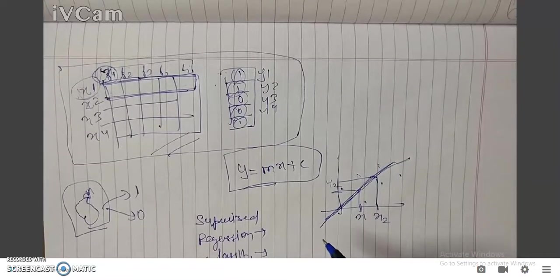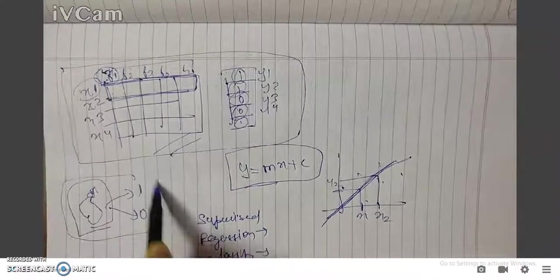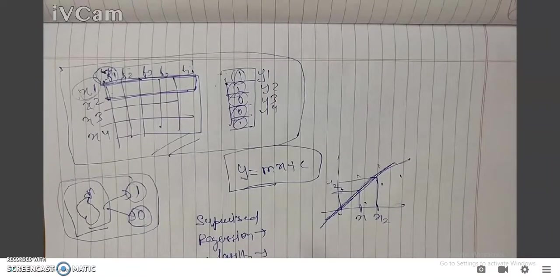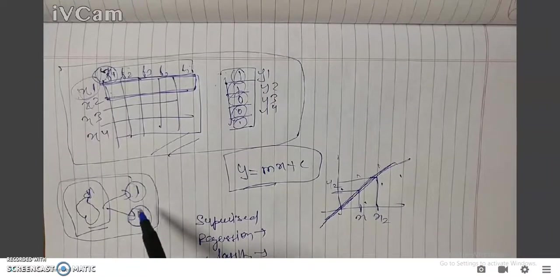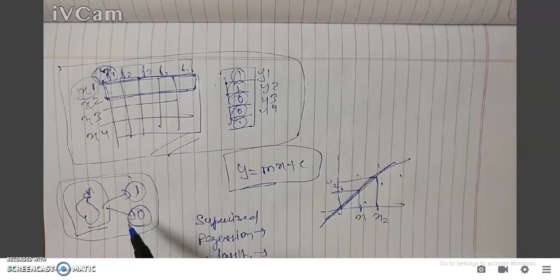But in classification, we have a set of categorical data in the Y label. Like if you see the example of the apple, it is given only 1 and 0 as the data points for that Y. So it can only be whether it is apple or it is not apple. So these are regression and classification.